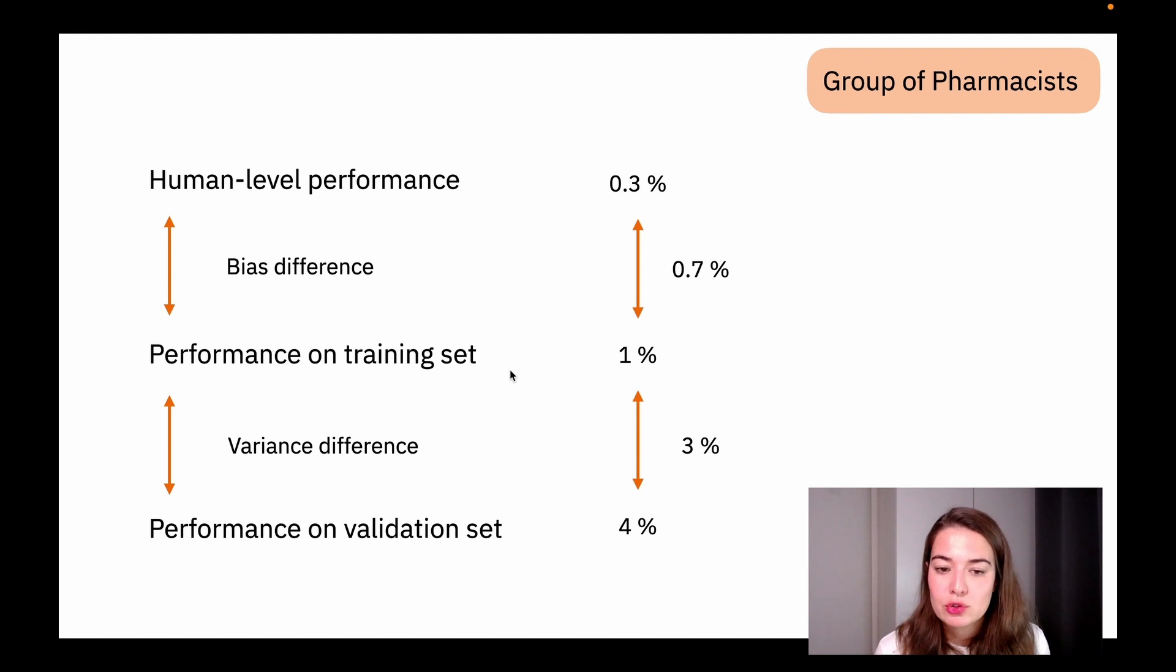So what we can do at that point is to look at the differences. Between the human level and the training set performance, we have 0.7% difference. And for the training set and validation set, we have 3% difference.